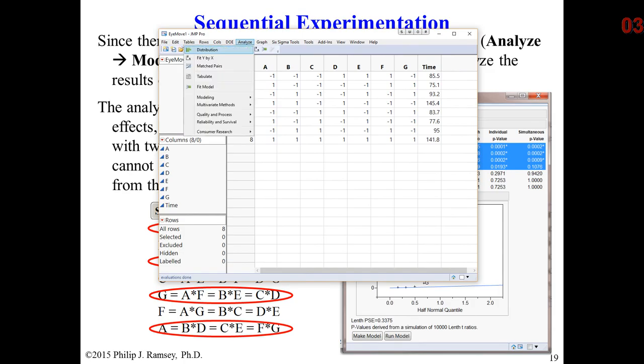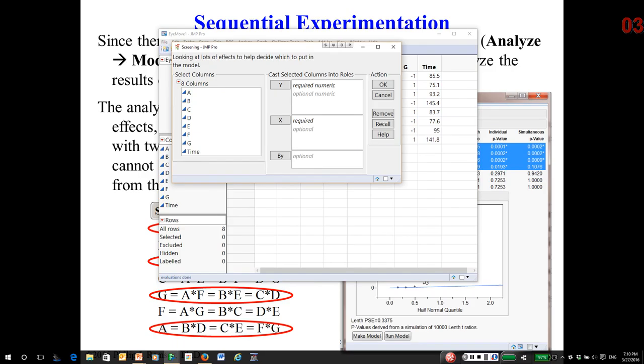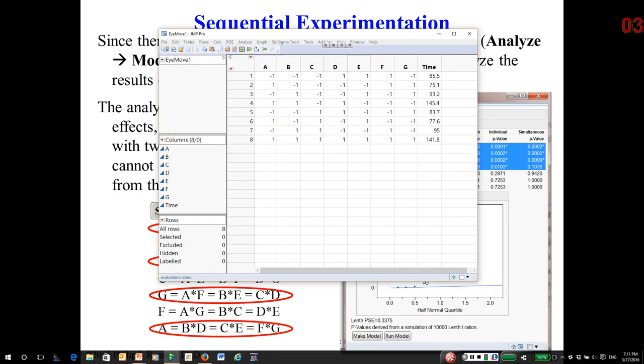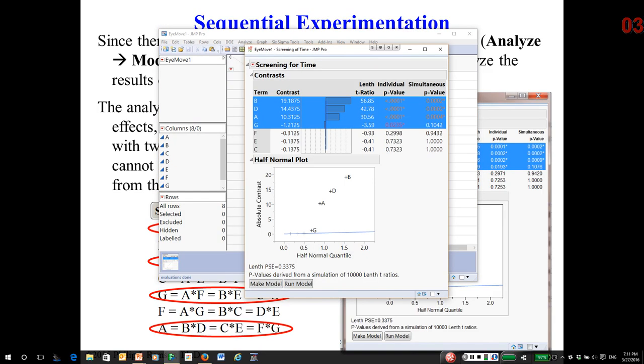So, I go to Analyze, Modeling, Screening, I'll put in my seven factors, and time is the response. And again, JMP is only going to show you the main effects. Keep in mind the main effects are aliased with many different interactions, and you can see four of them, B, D, A, and G, seem to be significant.